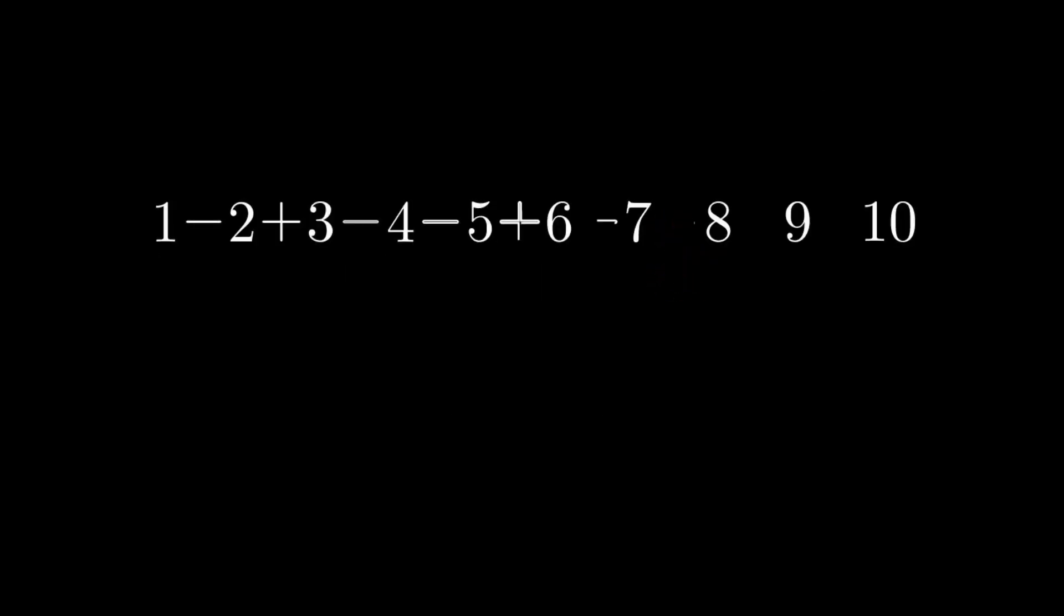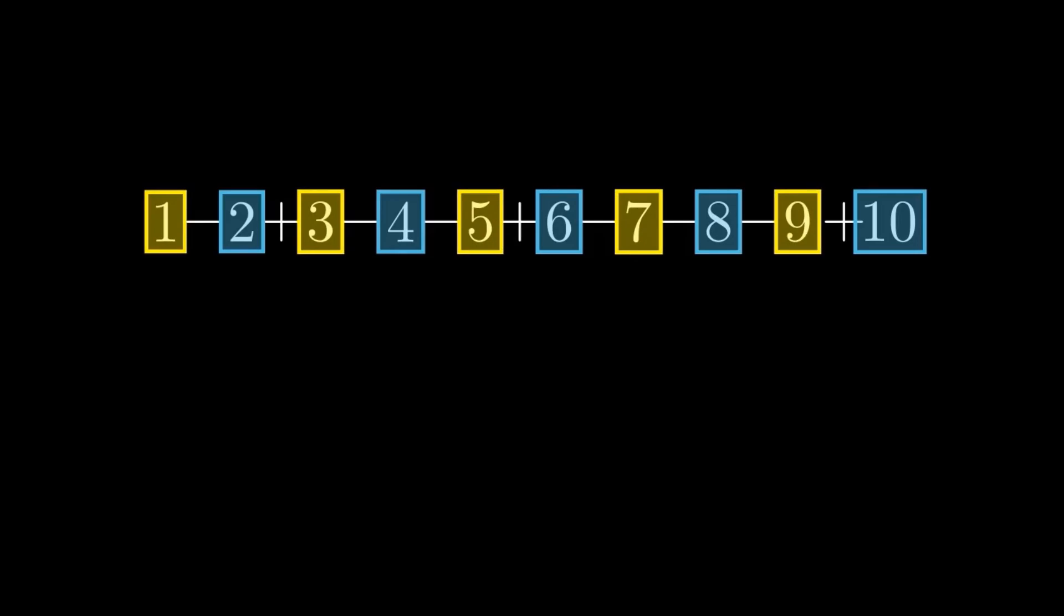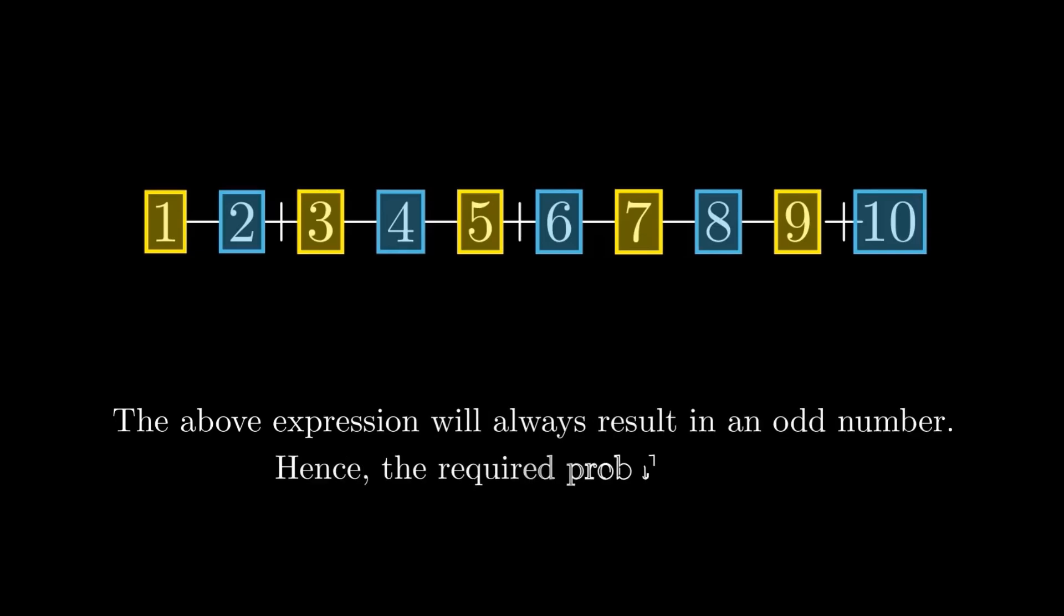We have five even numbers, and their combined contribution will always be even, regardless of the signs placed in front of them. Similarly, we have five odd numbers, whose total will always be odd, no matter how the signs are arranged. Therefore, the above expression will always result in an odd number, and as a result, it can never be equal to zero. Hence, the required probability is zero.